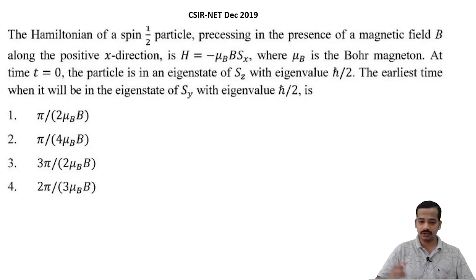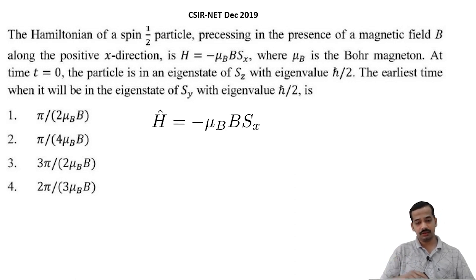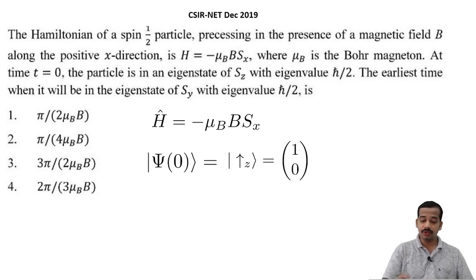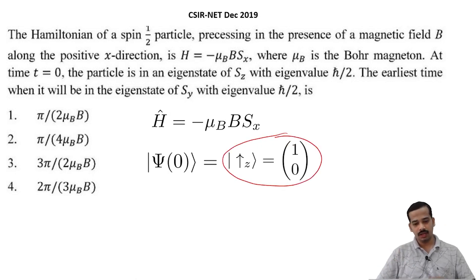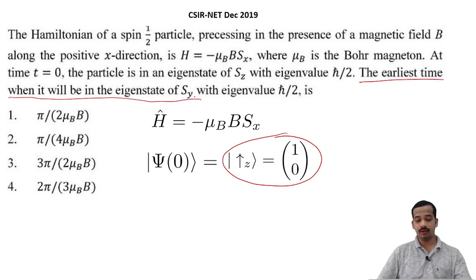Now let us take CSIR NET December 2019 question. The Hamiltonian of a spin-half particle precessing in the presence of magnetic field B along the positive x direction is H equal to minus mu-B times B times S-x, where mu-B is the Bohr magneton. At time t equal to 0, the particle is in the eigenstate of S-z with eigenvalue h-bar by 2 — that means spin-up along z — and we need to find the earliest time when it will be the eigenstate of S-y with eigenvalue plus h-bar by 2.